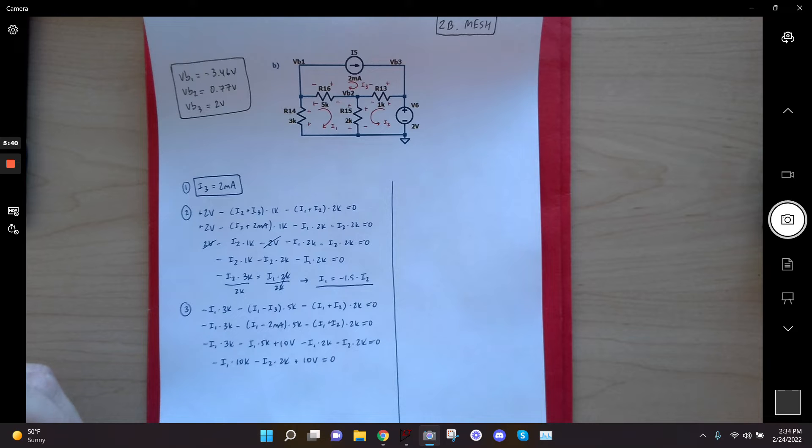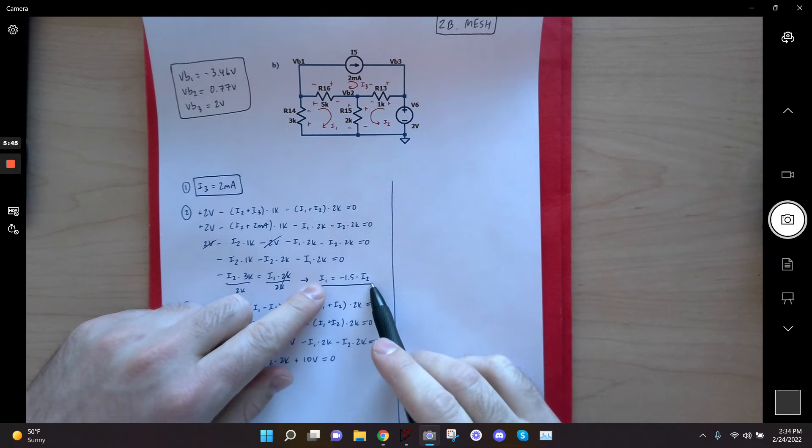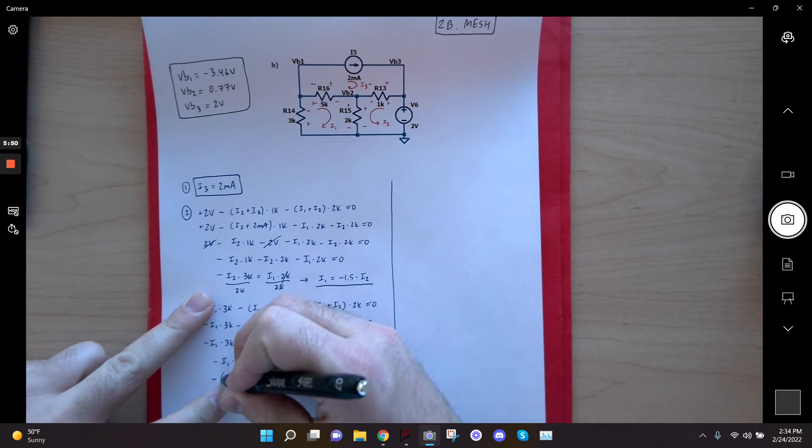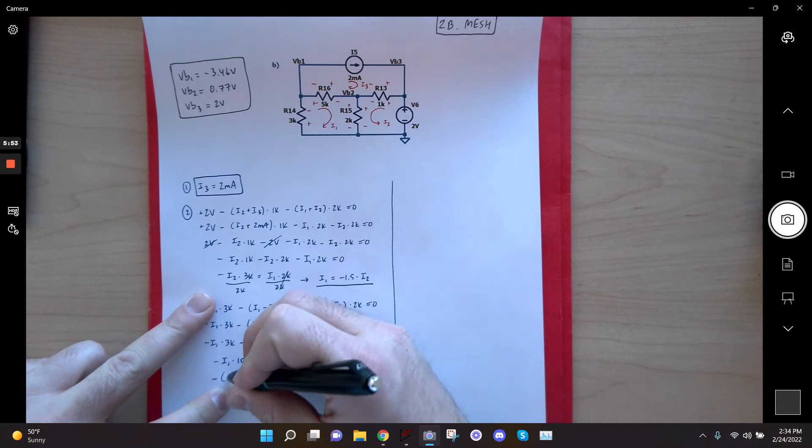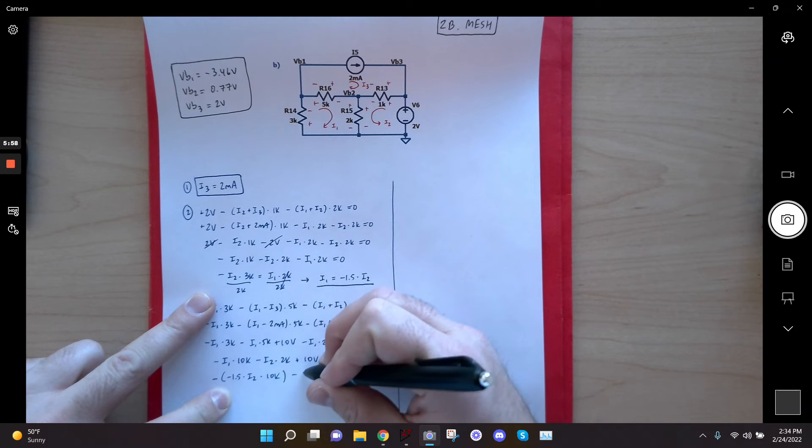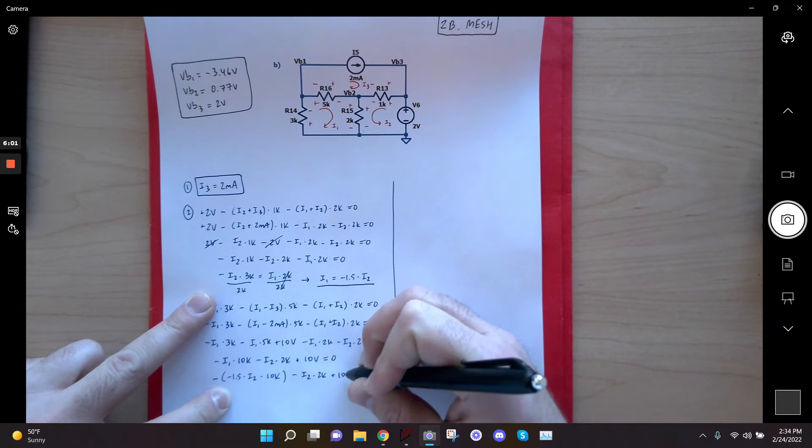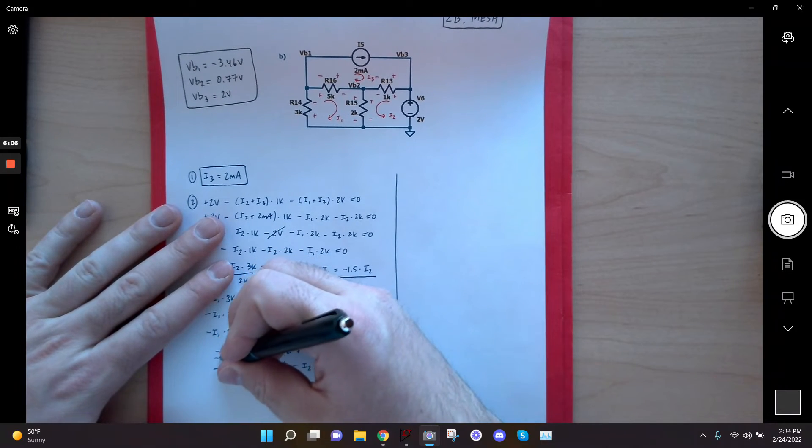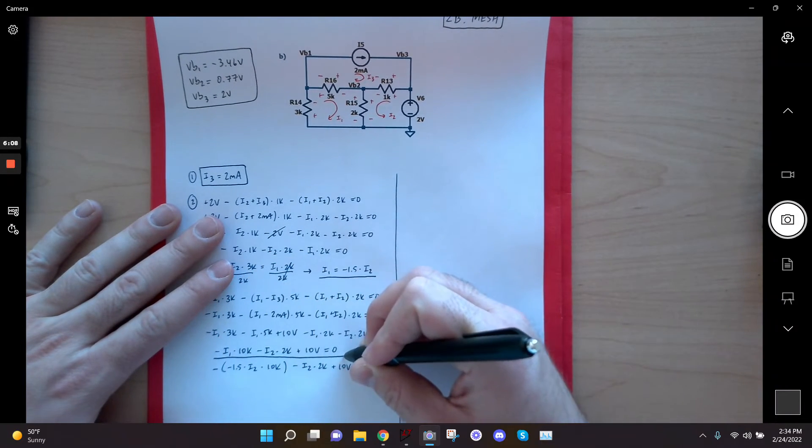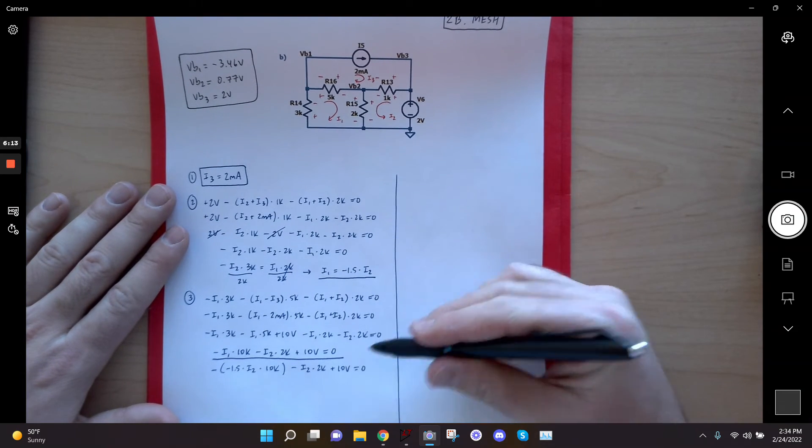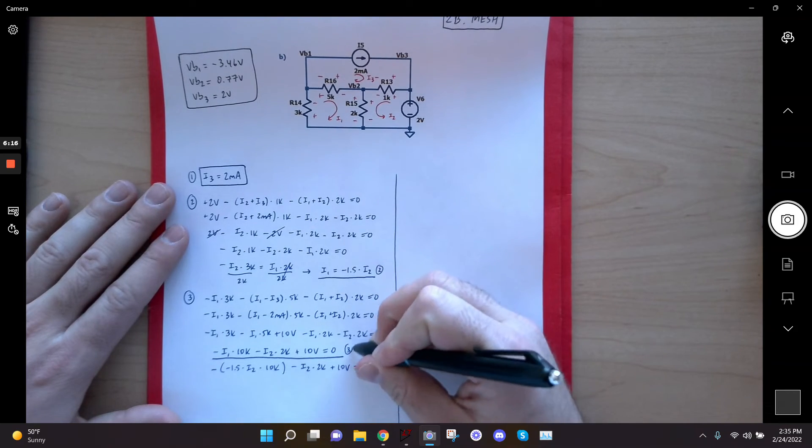So now I can go ahead and I can plug in this equation for I1 in this equation, right? So I can rewrite this as, instead of I1, negative 1.5 times I2. And then that's still multiplied by 10K. Minus I2 times 2K plus 10 volts gives me 0. So this was like the simplest form of equation 3 before we start plugging in. I underline the simplest form of equation 2, the simplest form of equation 3. So I'll go ahead and just note that.